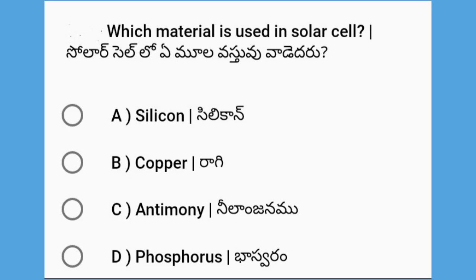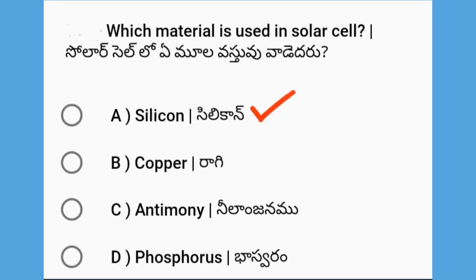Next, which material is used in a solar cell? The options are silicon, copper, antimony, and phosphorus. The answer is silicon.